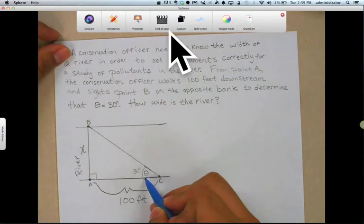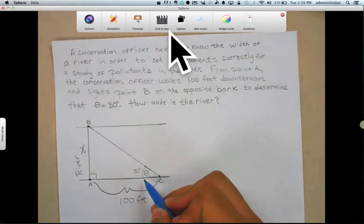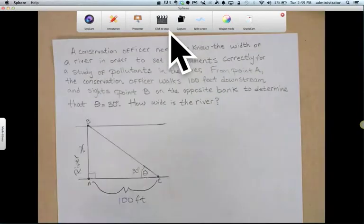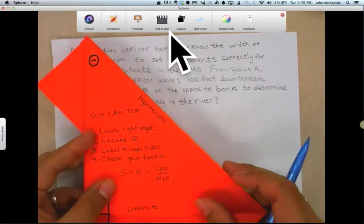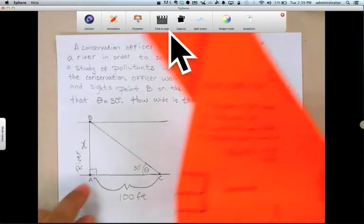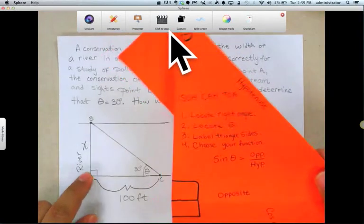And let's follow our steps from our right triangle foldable. Locate our right angle. We've done that. It's right here. Locate theta. We've done that. It's right here.